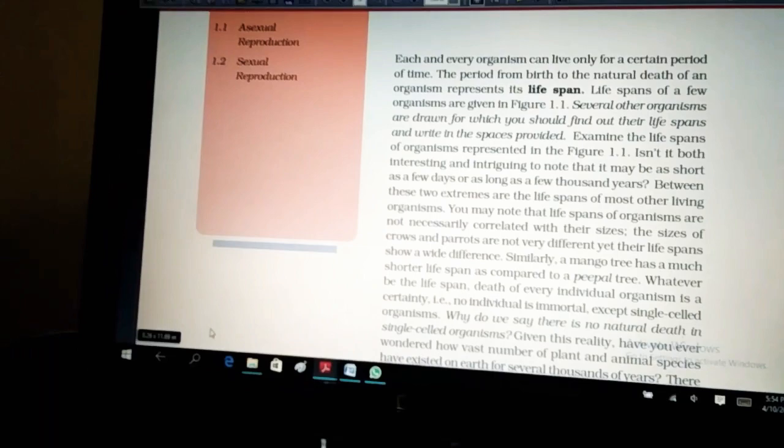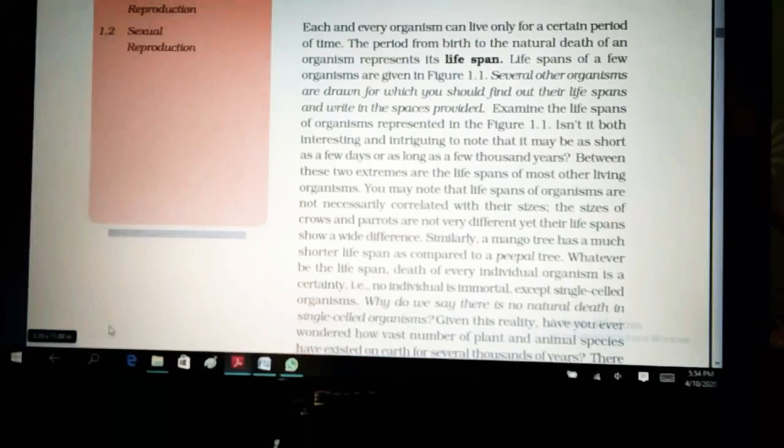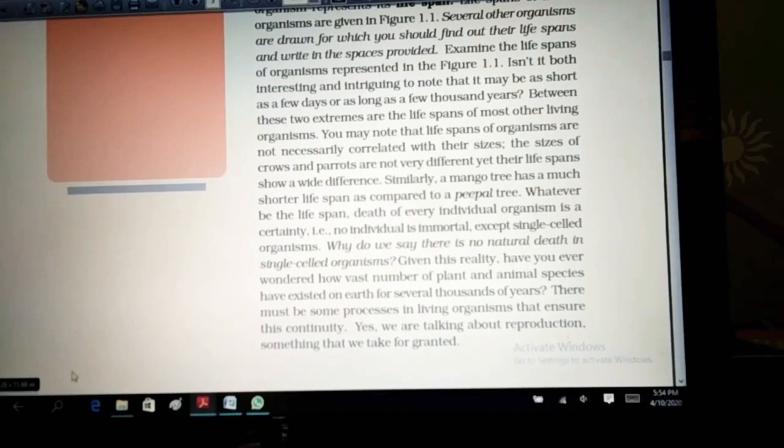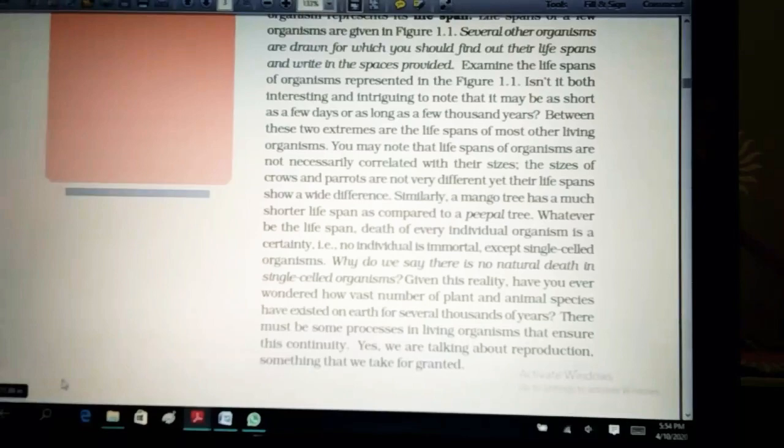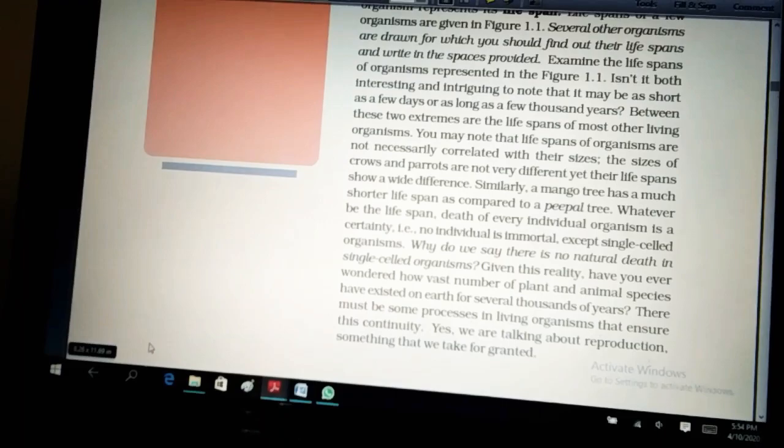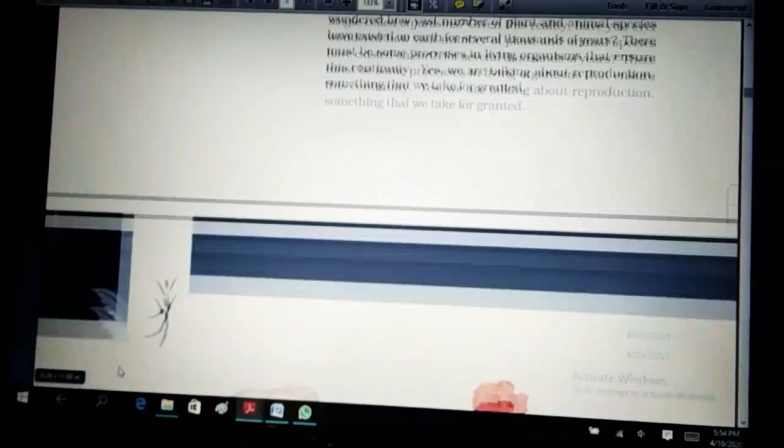Whatever be the lifespan, death of all organisms is given. Nothing is immortal, but there are certain single-celled organisms that are immortal. And there are thousands of plant species that are growing around us. The animals are growing around us. There must be some process with the help of which they give rise to new entities, to their own generations, to their own morphs or new organisms. And this is called as the reproduction.